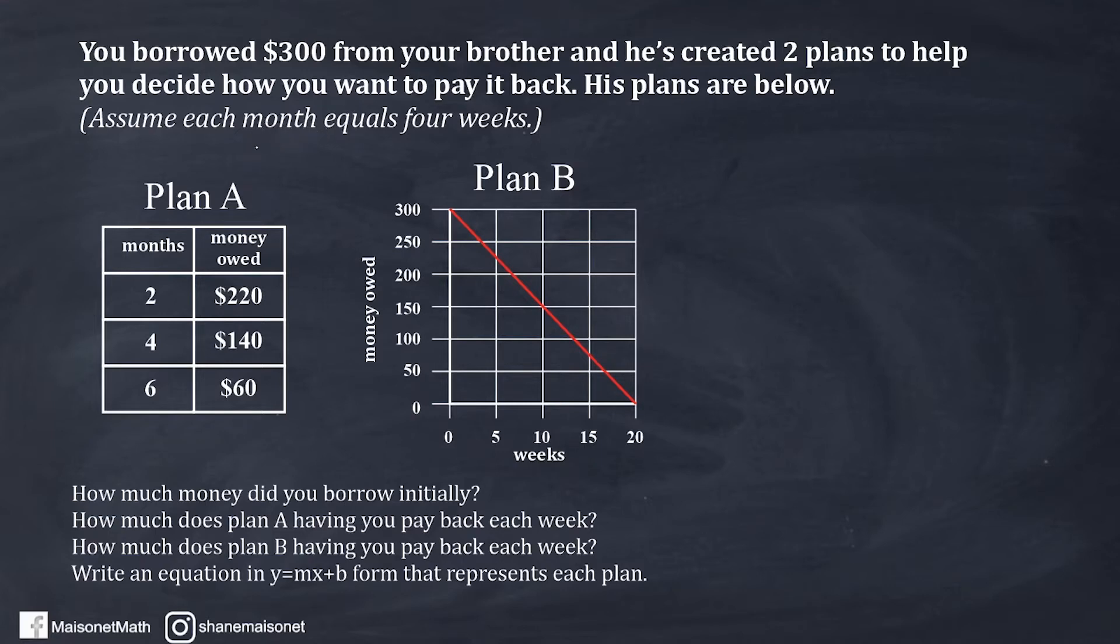Now, the problem did state that each month equals four weeks, even though in the real world we know that's not true. A month is only four weeks in February that's not a leap year. So we're just going to assume that each month here is four weeks. So two months we would actually call that eight weeks, and four months here, four times four would be 16 weeks, and six months times four weeks would be 24 weeks.